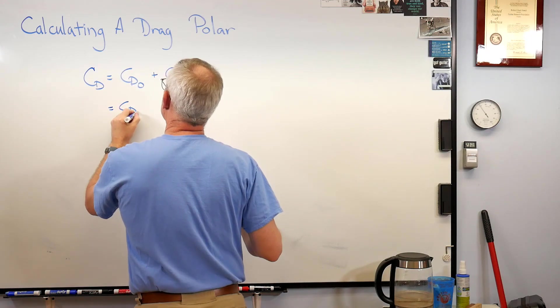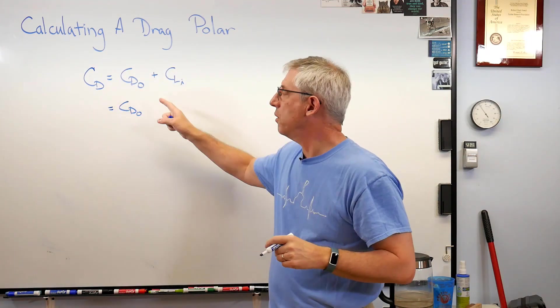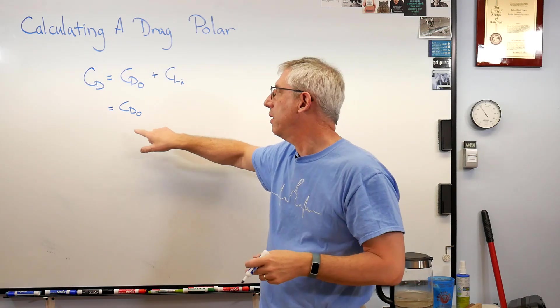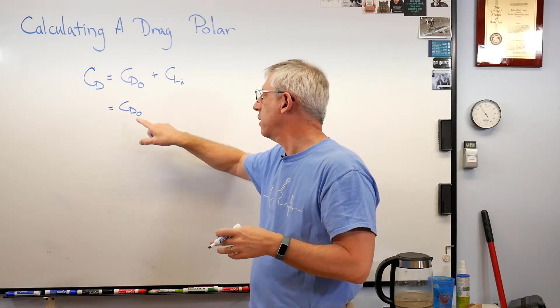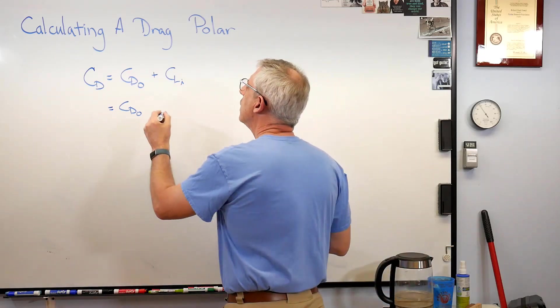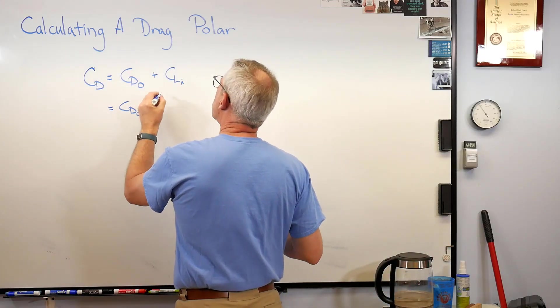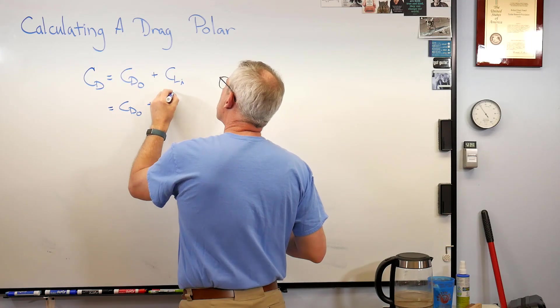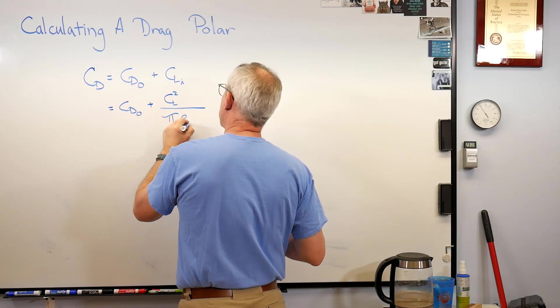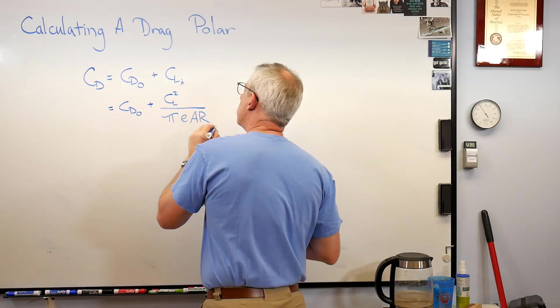CD zero is just a number and you either measure it or calculate it. Practically speaking you kind of got to measure it. The contributors to CD zero sometimes get pretty complicated, so in practice you measure a lot of the time. This induced drag is a very simple expression.